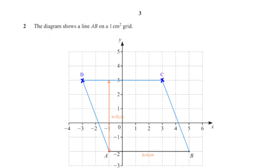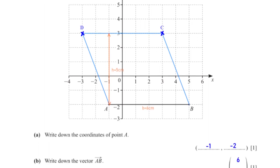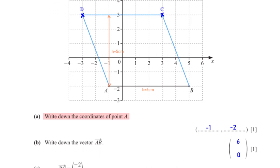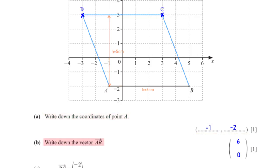The diagram shows a line AB on a 1 cm square grid. Write down the coordinates of point A. When we map A onto the x-axis, we get negative 1, and onto the y-axis we get negative 2. So A is at (negative 1, negative 2). Write down the vector AB. To move from A to B on the grid, we move 6 units to the right, so vector AB is (6, 0).